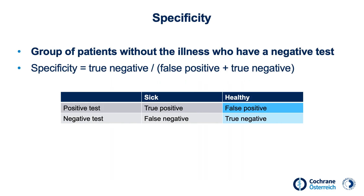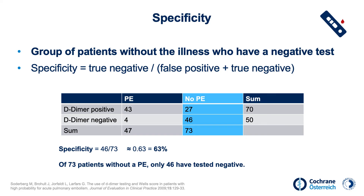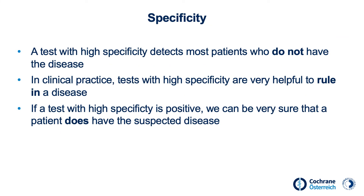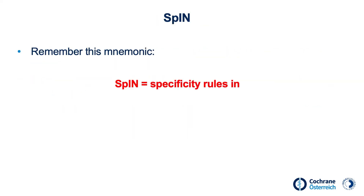On the other hand, specificity refers to the proportion of those who do not have the disease and have a negative test — the so-called true negative results. It is calculated with the number of true negative results divided by false positives and true negatives. For a rapid D-dimer test, 46 out of 73 patients were correctly diagnosed with not having a pulmonary embolism, leading to a 63% specificity. From a clinical perspective, a test with high specificity detects most patients who do not have the disease, making it very useful to rule in a disease. Remember the mnemonic: SPIN — Specificity rules in.